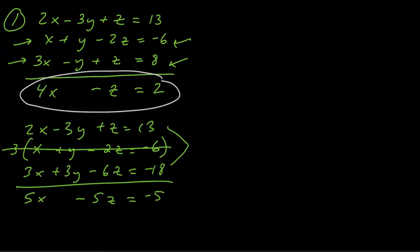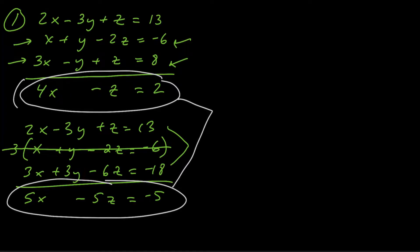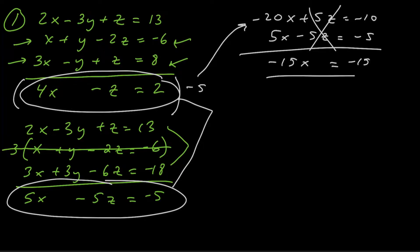Now we're down to two equations involving two variables, x and z. Let's eliminate the z's. I've got a negative 5z in one equation and a negative 1z in the other. To get those z's to cancel, I'm going to multiply the second equation by negative 5, giving us negative 20x plus 5z equals negative 10. Adding straight down with 5x minus 5z equals negative 5 gives us negative 15x equals negative 15. Dividing by negative 15, x equals 1.